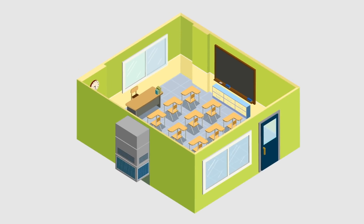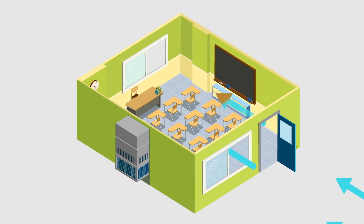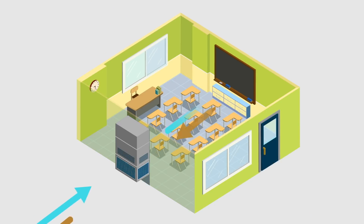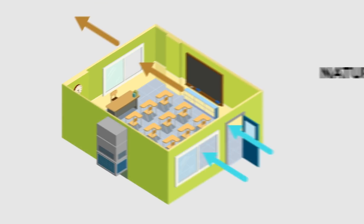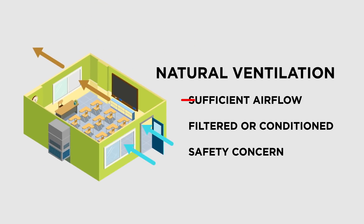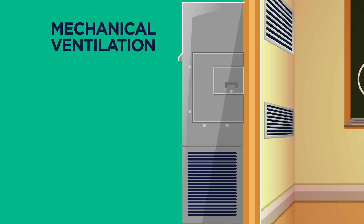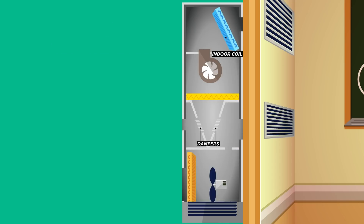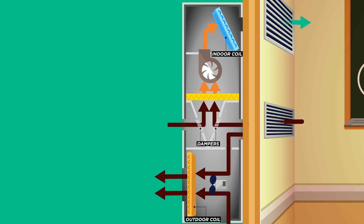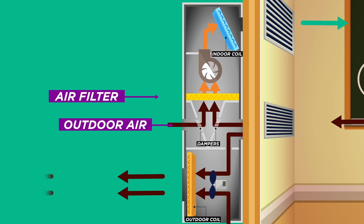Classrooms are ventilated either naturally through open doors and windows, or mechanically with an HVAC system. Natural ventilation may not provide sufficient airflow for a classroom environment. In addition, the air is not filtered or conditioned, and open doors and windows may pose a safety concern. This is why mechanical ventilation is recommended for classrooms. We usually think of HVAC systems for their heating and cooling functions, but they also provide ventilation and filtration.